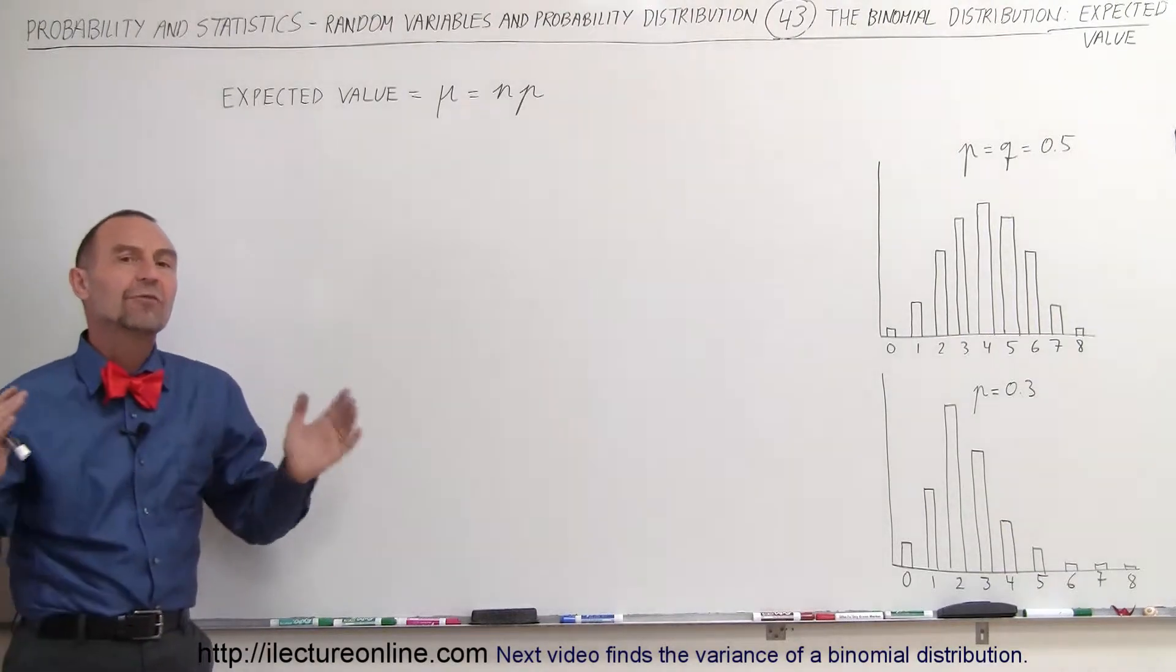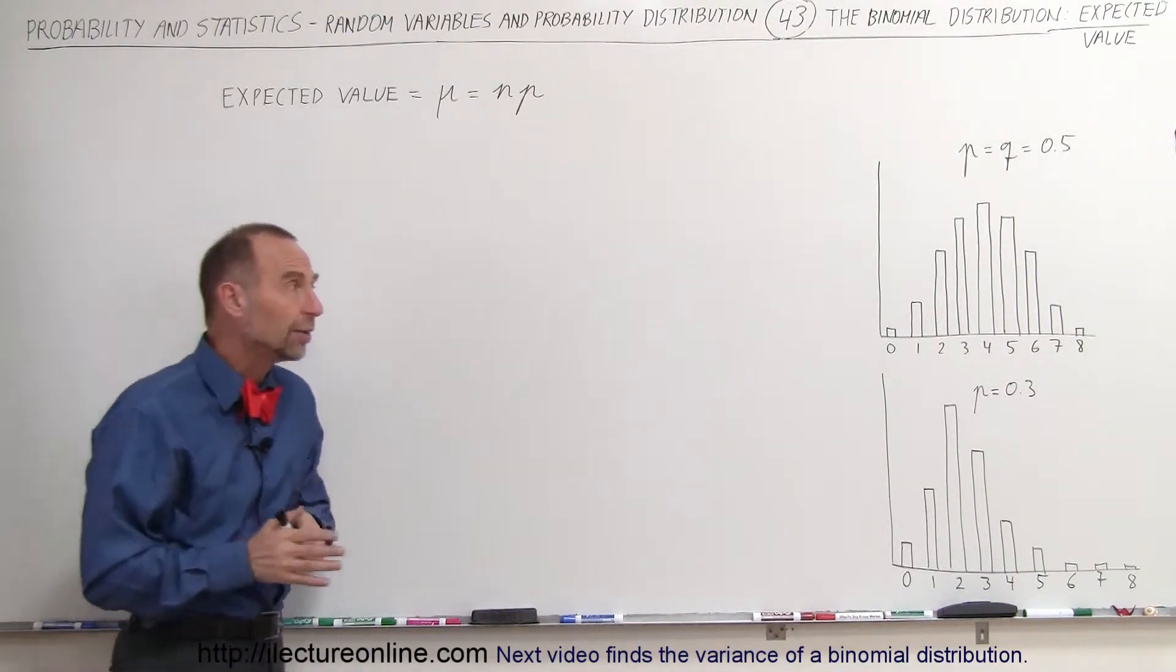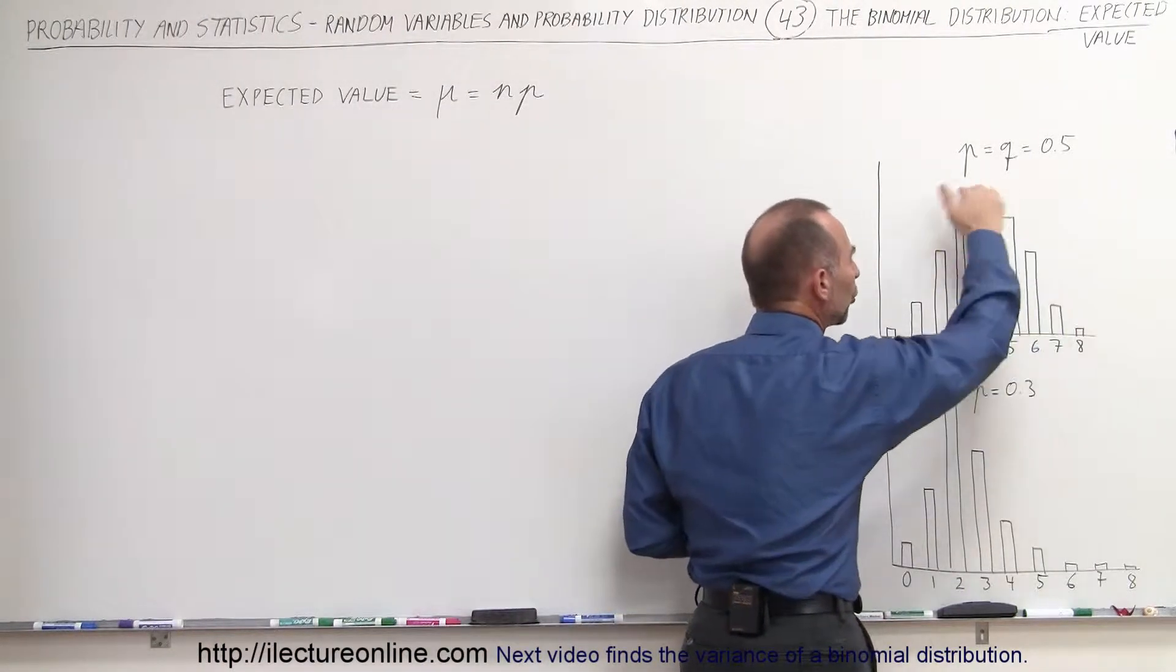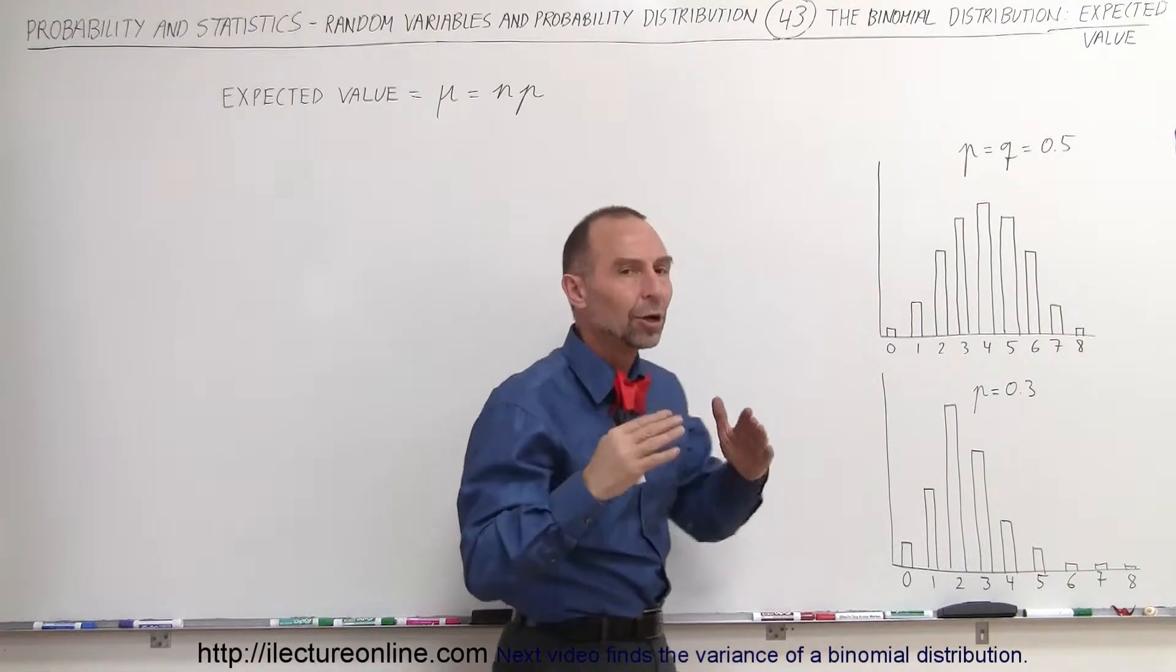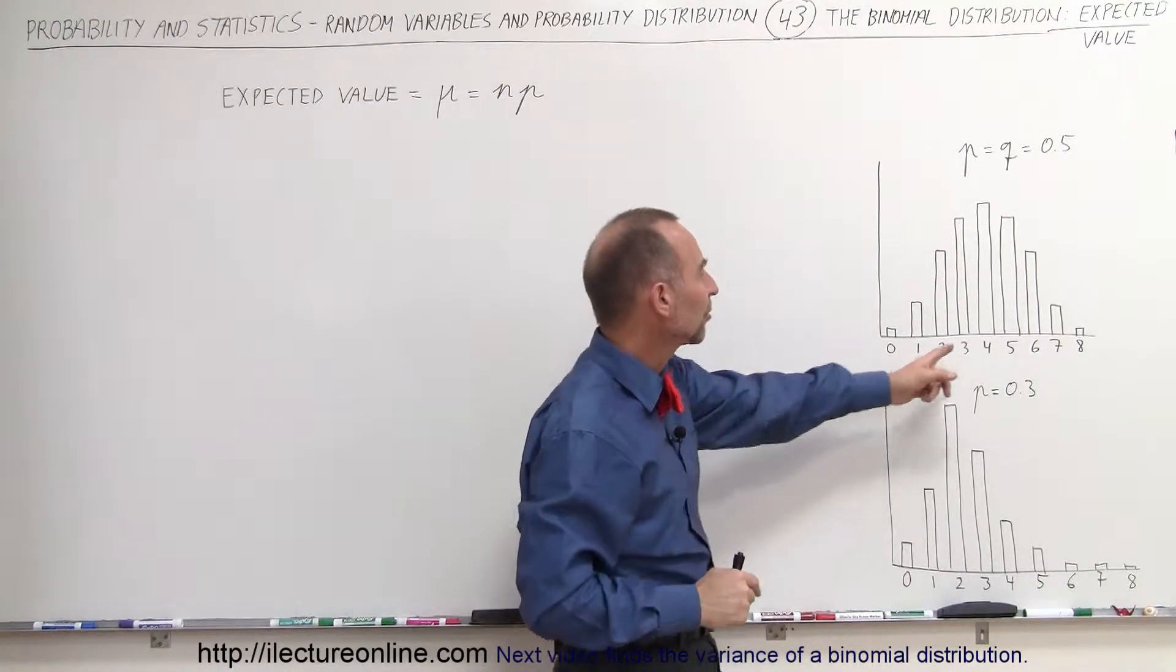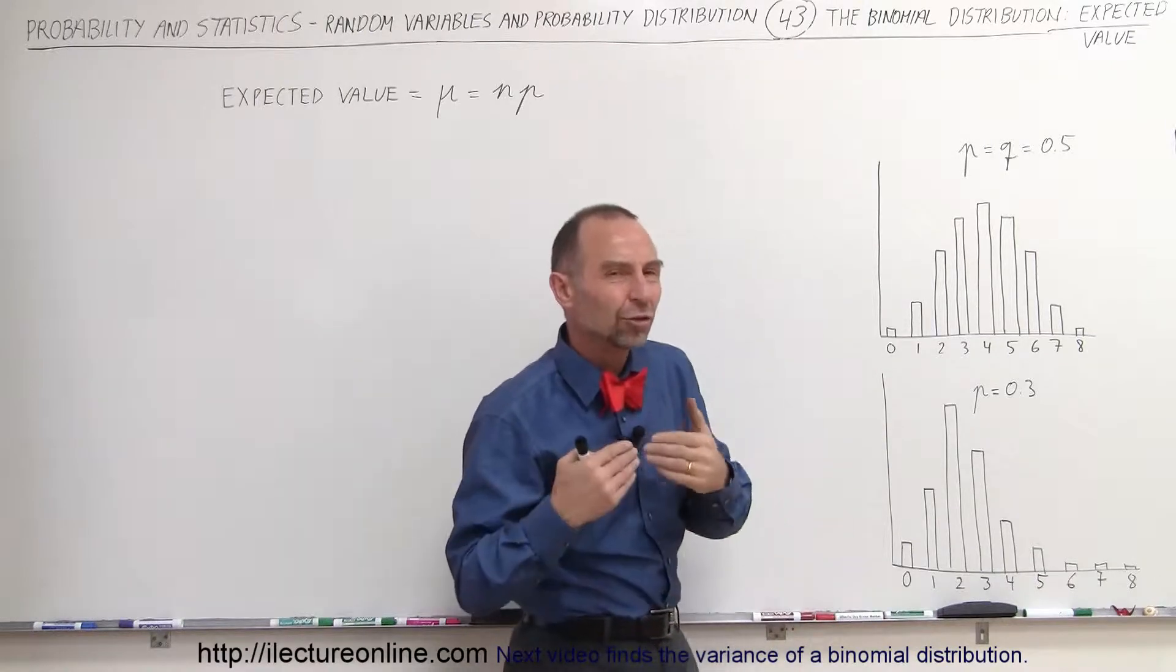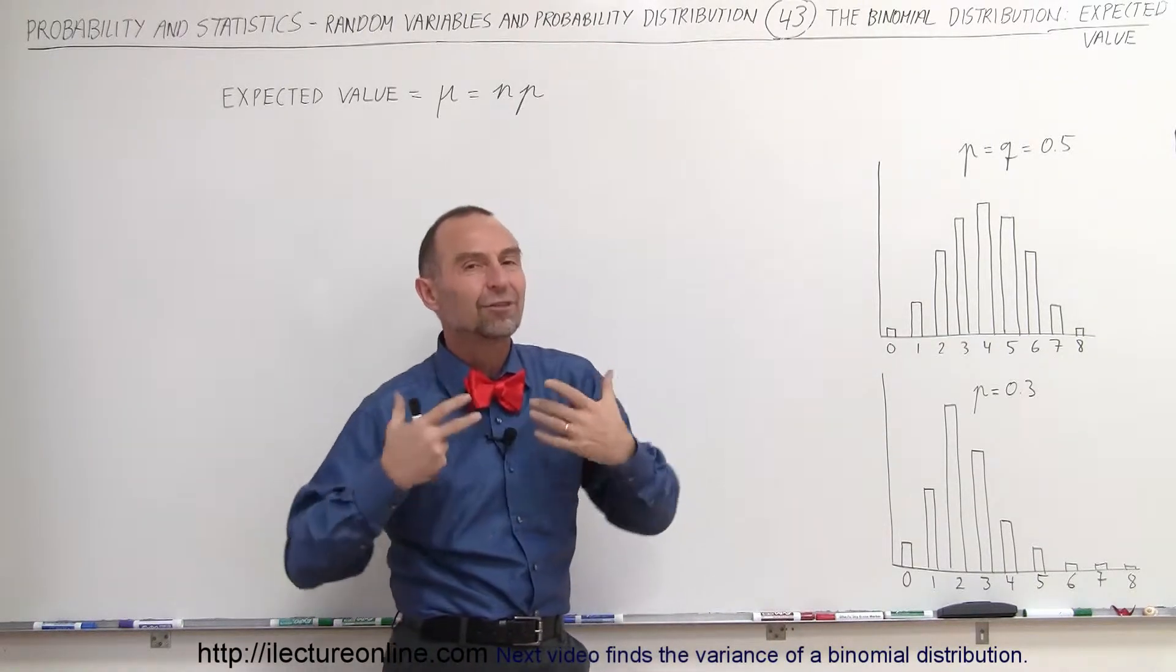So what's the expected value of a distribution? Now it turns out the expected value of a distribution which has kind of a normal curve to it, which has a symmetric curve to it, you would expect the middle value to have the highest probability of occurrence and so therefore that becomes what we would call the expected value.